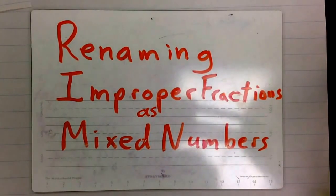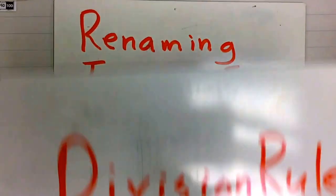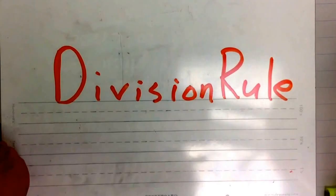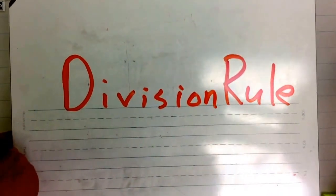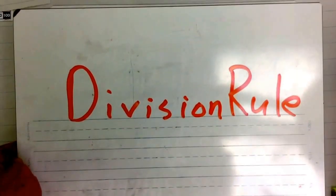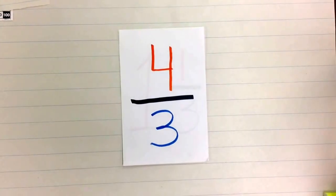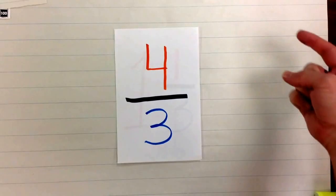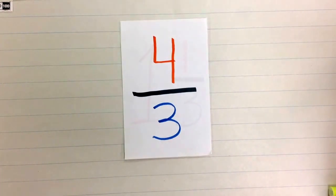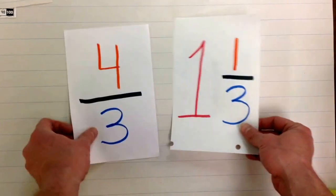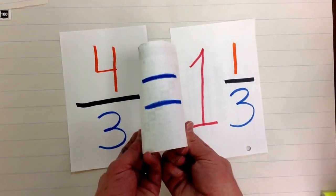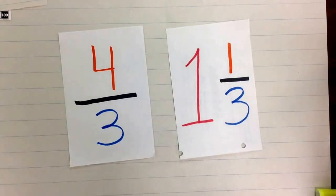We're going to learn about renaming improper fractions as mixed numbers using the division rule. As you can tell, I'm pretty excited about this. We're going to go over how to change an improper fraction to a mixed number using fraction towers and candy bars, and then we're going to actually learn the math behind it. Let's start with the fraction four-thirds. This is an improper fraction.